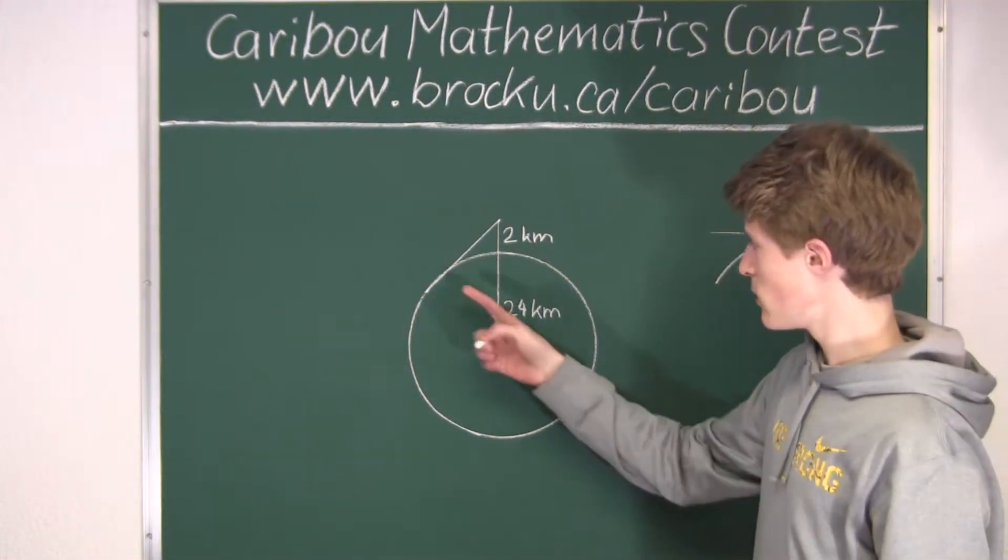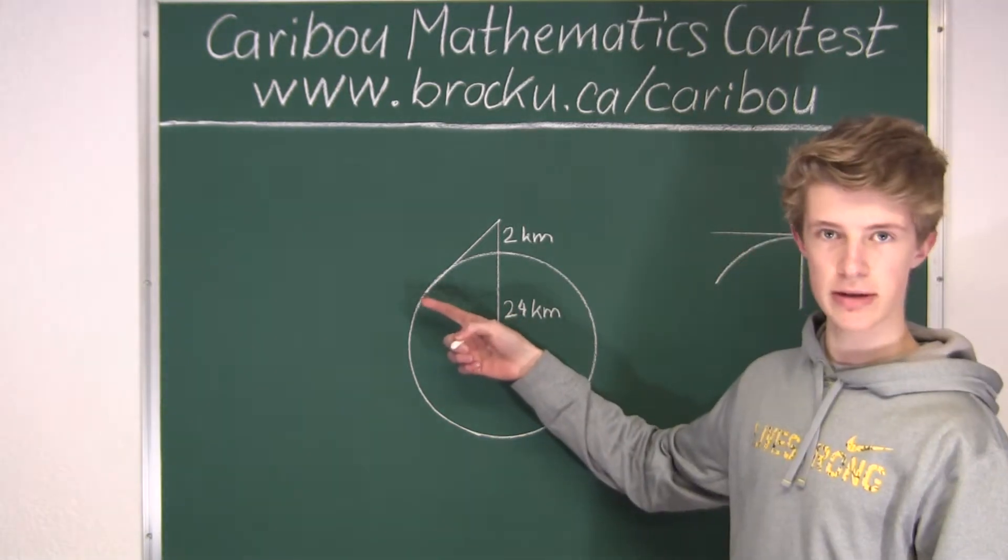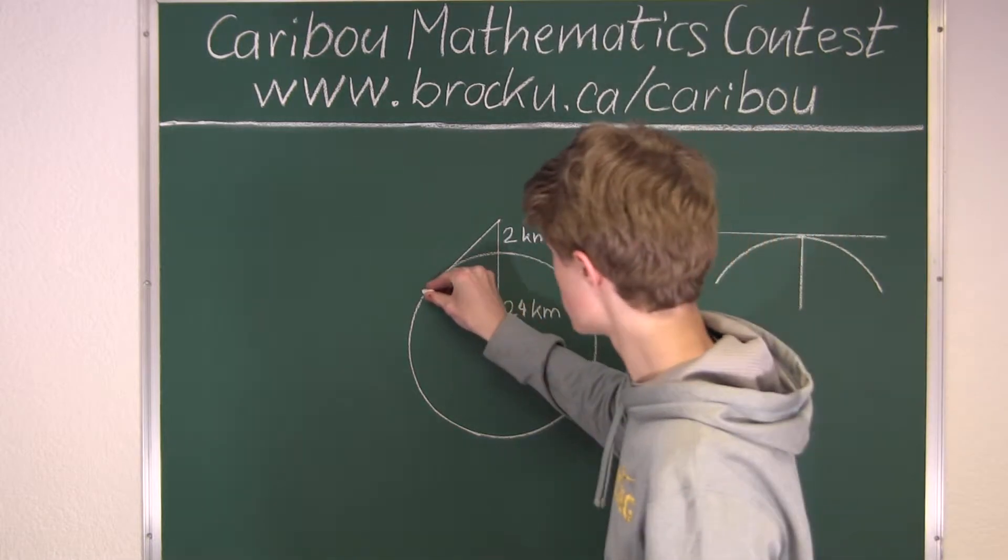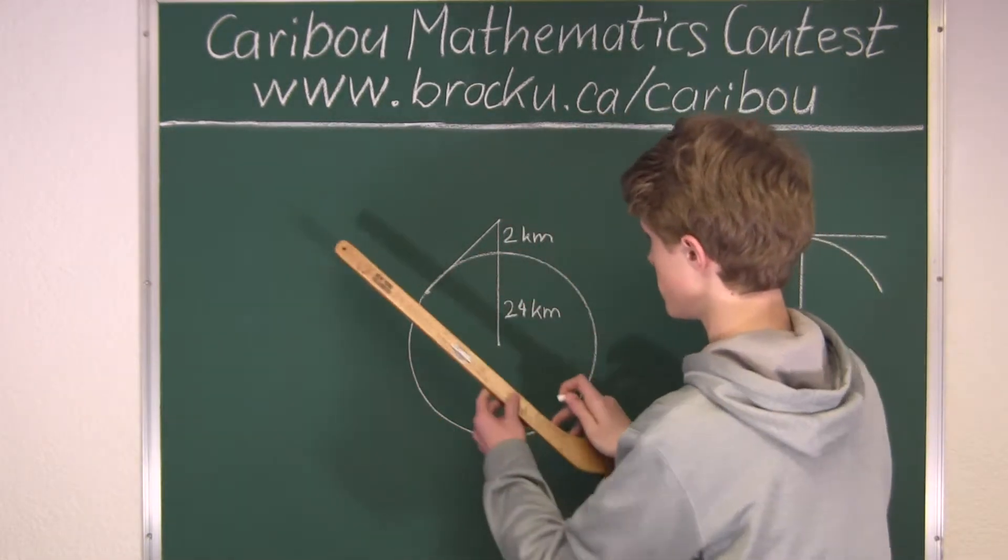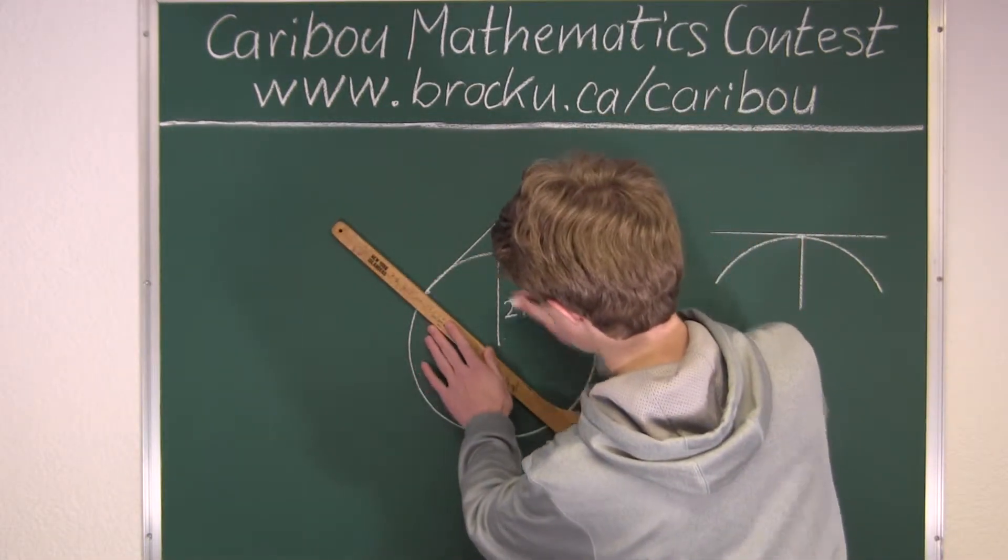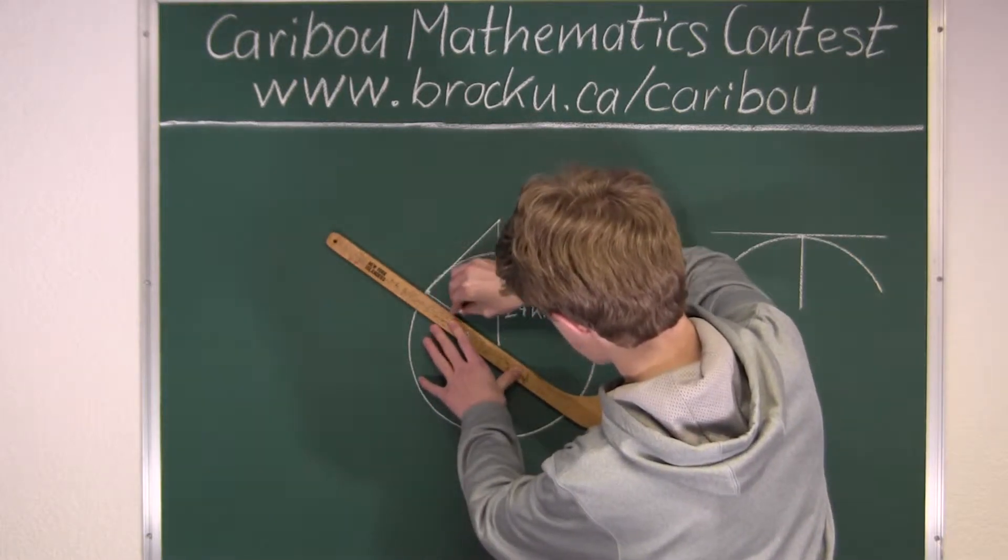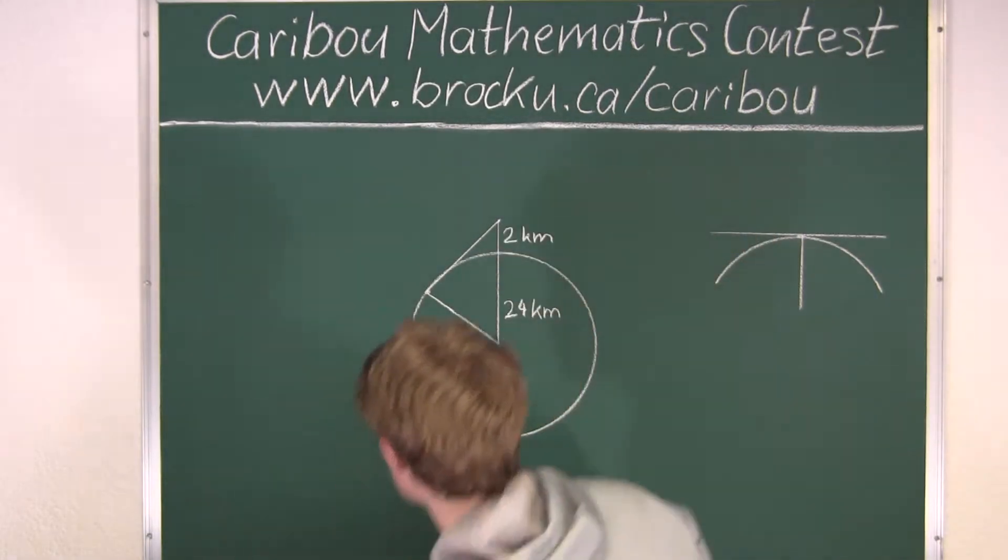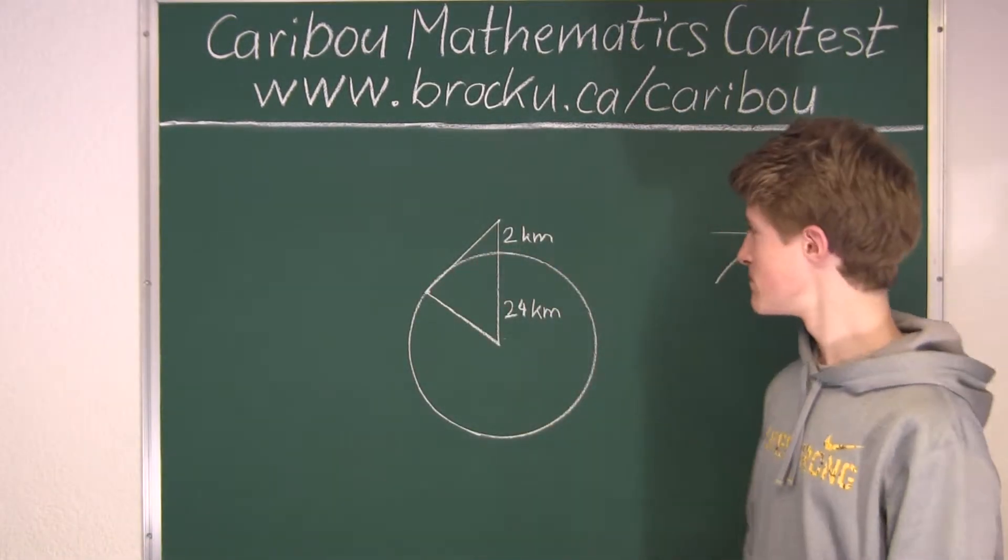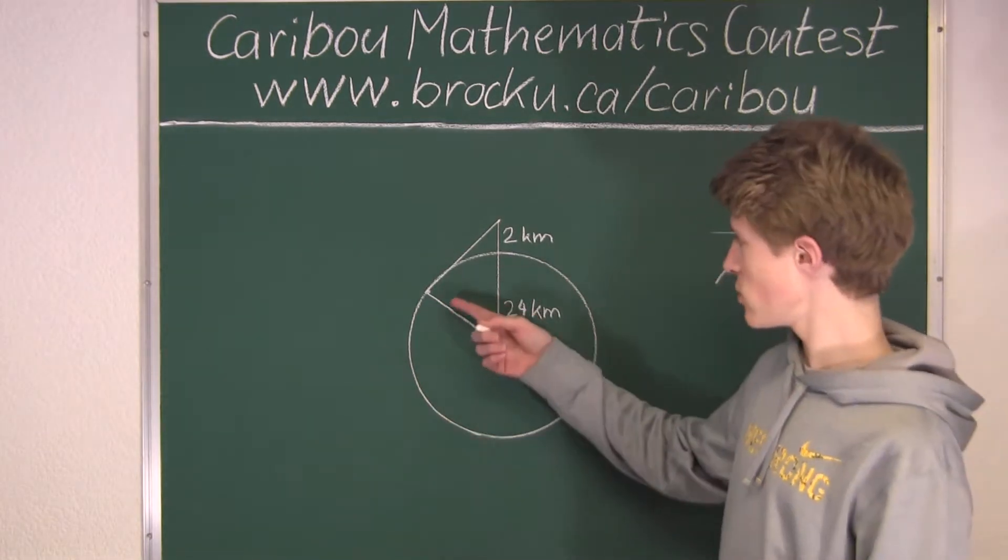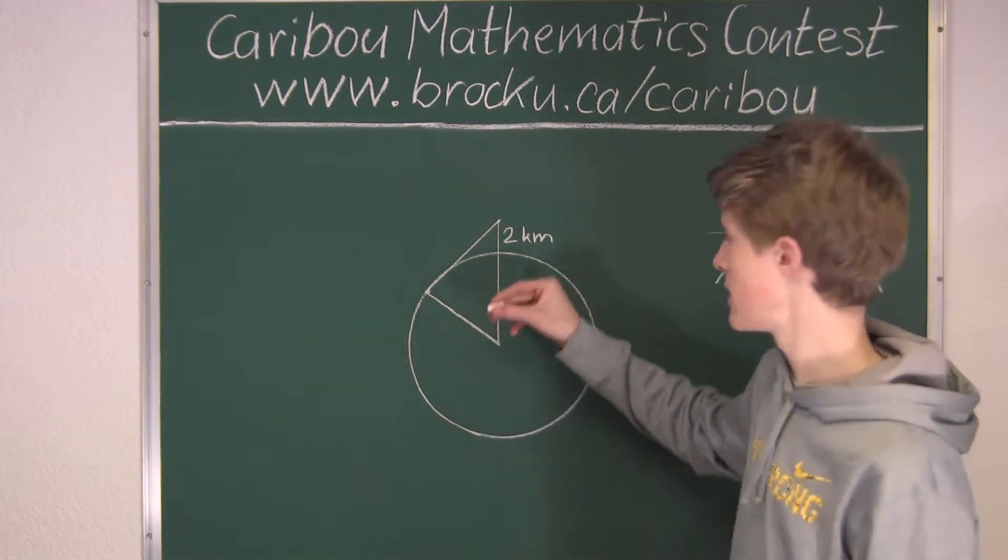Okay, so now we will connect a line from this point to the center of the circle. Okay, so now we have a triangle here, and now I will show you why this is a right angle.